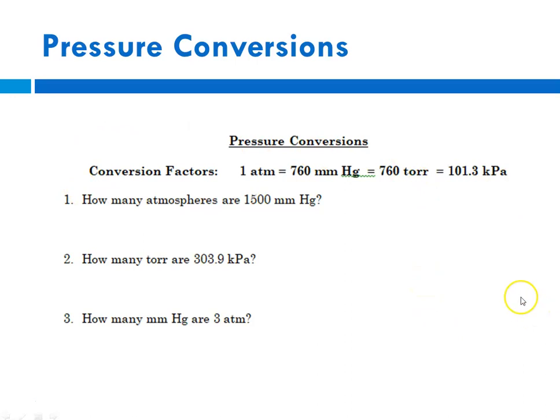So for pressure conversions, and I'm just going to show you what a worksheet would look like, we know that one atmosphere is the same as 760 millimeters, which is the same as 760 torr, which is the same as 101.3 kilopascals. Now, this is dimensional analysis. So what we're going to be doing is a pressure conversion, and again, we're going to be using these as our conversion factors. So when you're doing these calculations, you would always start with your given, in this case, 1500 millimeters, and then you would pick the conversion factor that would get you there.